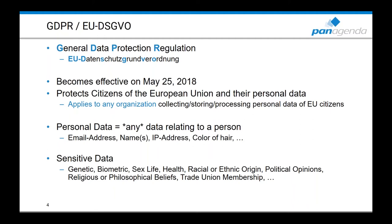Let's define the types of data the GDPR is about. First, it's about any personal data relating to a person — that can be an email address, first name, last name, IP address, color of hair, anything. If you just collect everyone's hair color without a name or identifying info, that's statistical data, not personal. An email address, regardless of whether it contains a name, already identifies a person and is therefore personal data.